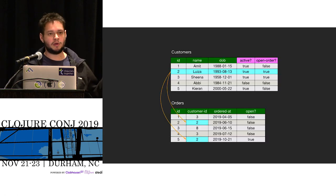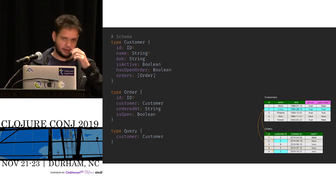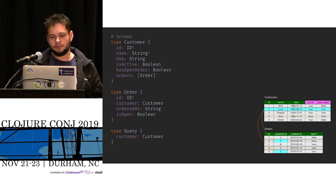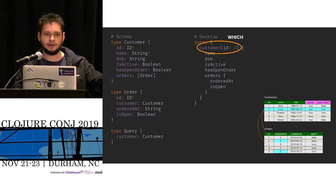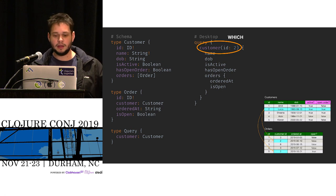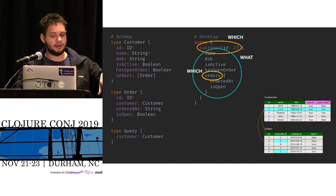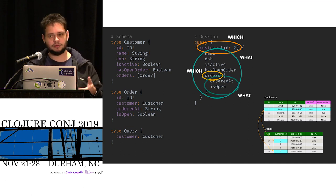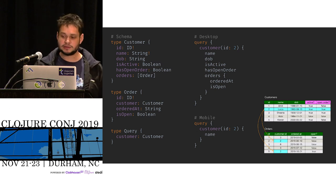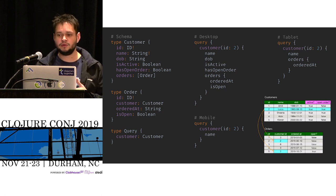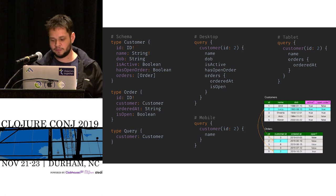Let's see how we could solve the previous problem using GraphQL. First you define a schema — that's your full interface. With that in hand, we can write a query for the desktop demand. First there is a "which" saying: I'm talking about customer 2. Then there is the "what": I want all these properties about this customer. Then the order is another "which" — pointing to a collection of orders — and from each order, I want this. That's the recursive composition property GraphQL does. When you have other clients like mobile or tablet, they can each specify what they want. The server says "I have all of these available" and the client says "I want this piece, this piece, and that piece." That's quite nice.